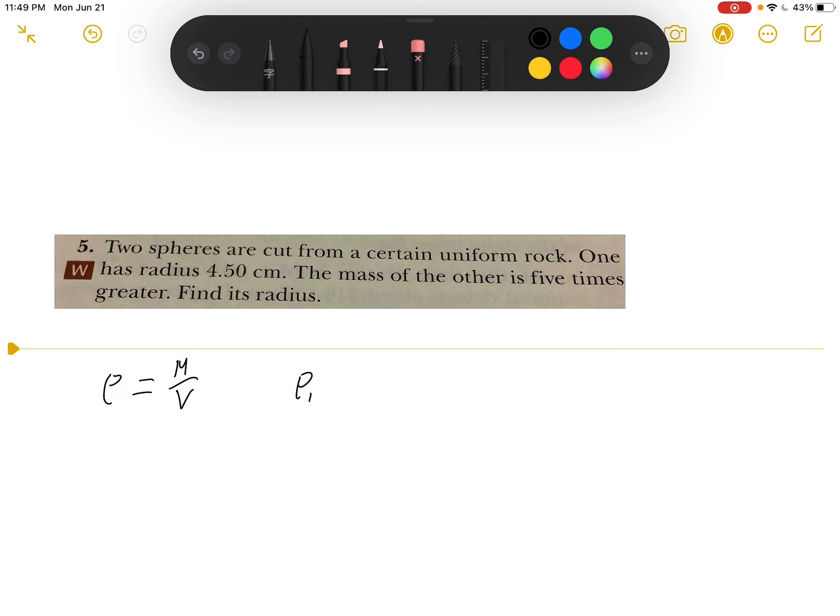Rho 1 equals mass over volume because volume of a sphere is 4/3 pi r cubed. So I'm going to put under here 4/3 pi r cubed.